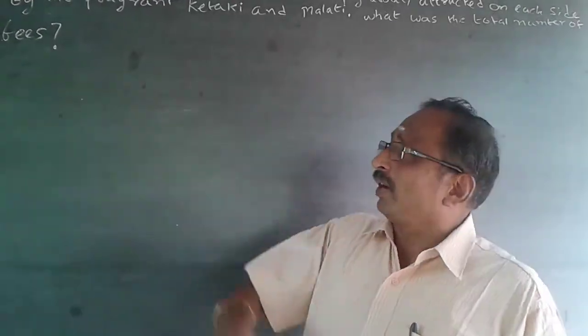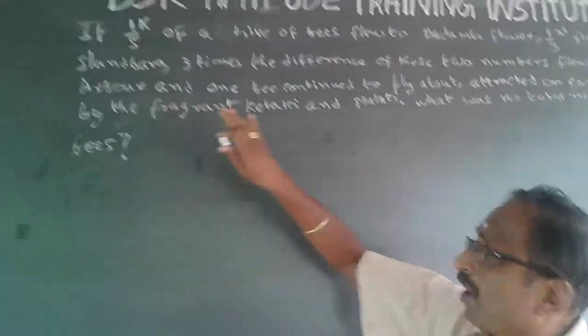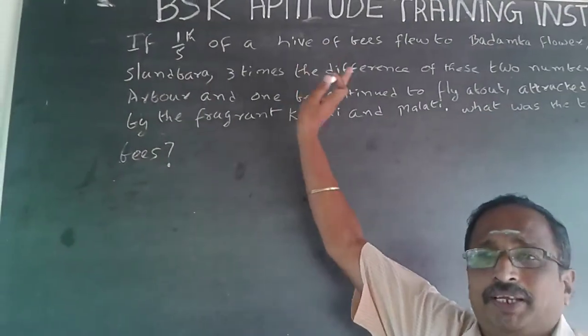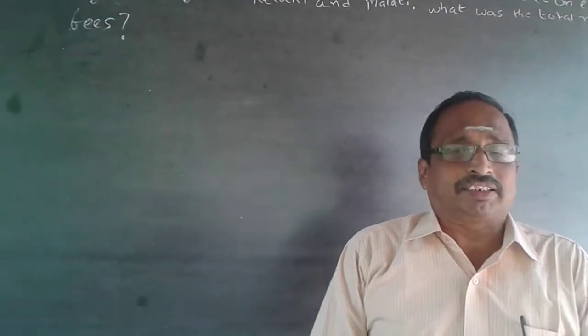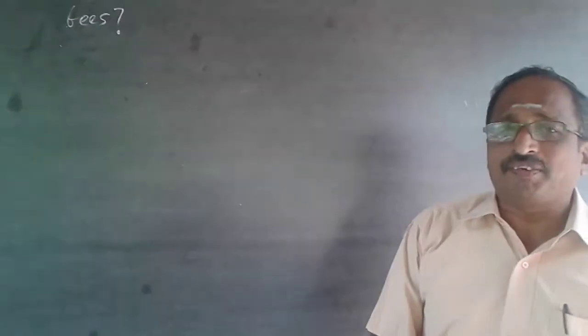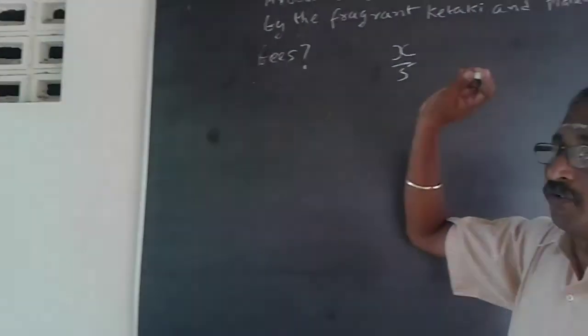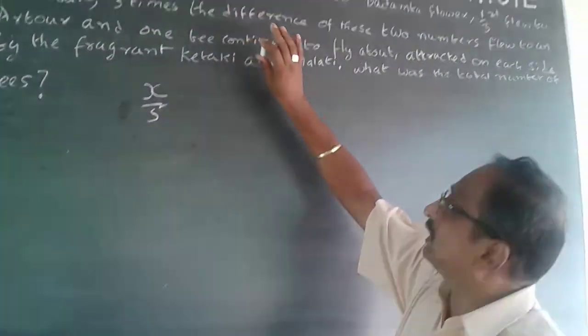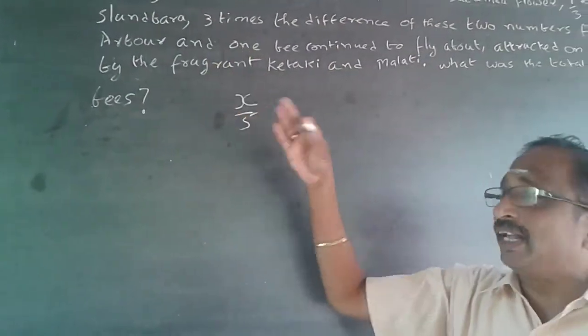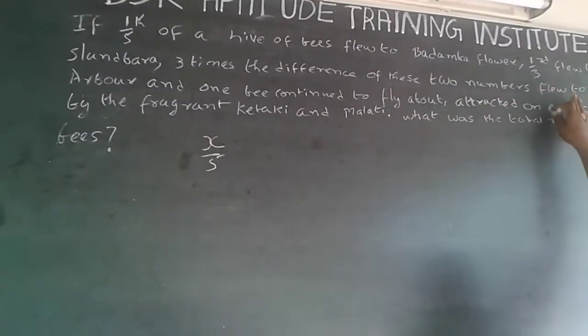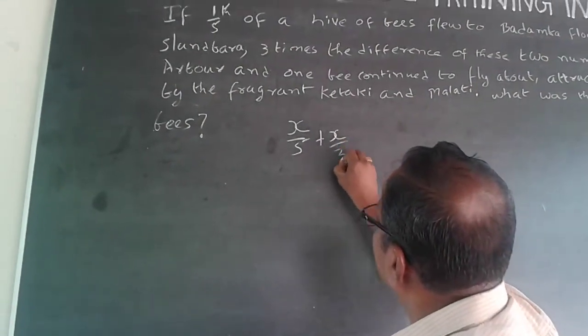What it says is there's a hive with lots of bees. Suppose the number of bees is x. One-fifth of it, x/5, goes to one flower. Then one-third go to Slanpara, so plus x/3.